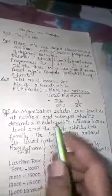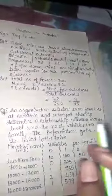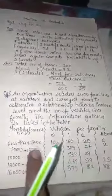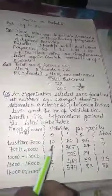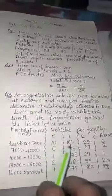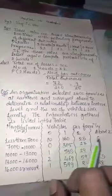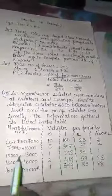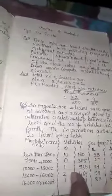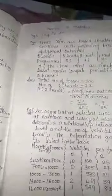An organization selected 2400 families. A survey was done to find out the relationship between income and number of vehicles owned. The following information is given in a table: income groups with corresponding families owning zero, one, two, or more than two vehicles.